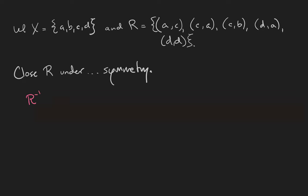This inverse relation consists of the pairs (C,A) and (A,C), which notice were already in our original relation, but we also get the pairs (B,C), (A,D), and (D,D).